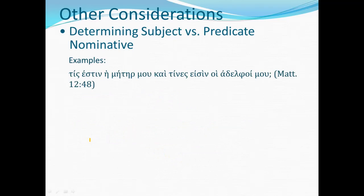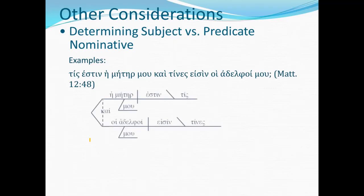Matthew 12:48: Who is my mother and who are my brothers? People had informed Jesus that his mother and brothers were outside wishing to speak to him. You might be inclined to put tis as the subject because it comes first, but that's not how it works. The known information is mother and brothers — those are the nouns people had just used. Jesus wants to say something about his mother and brothers; he's raising the question about them. So tis and tines — the interrogative pronouns — are the predicate, because the interrogative pronoun is usually the predicate asking the clause's question.